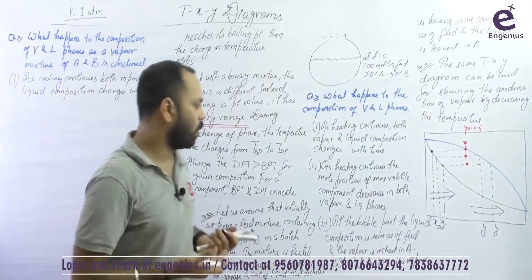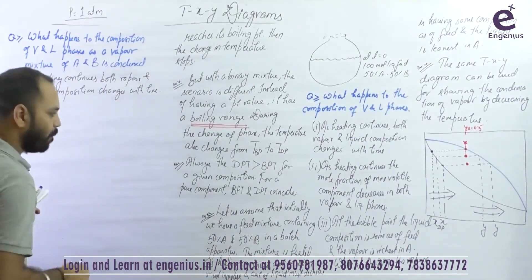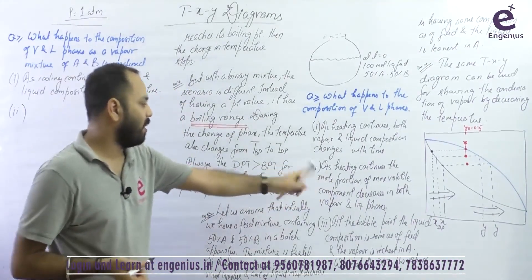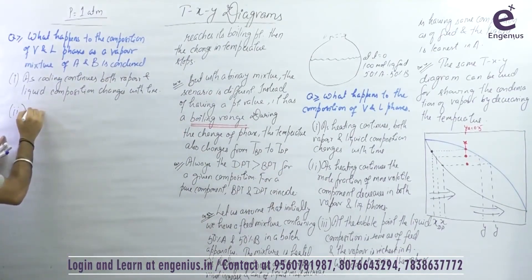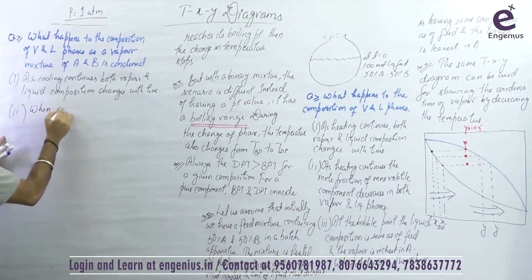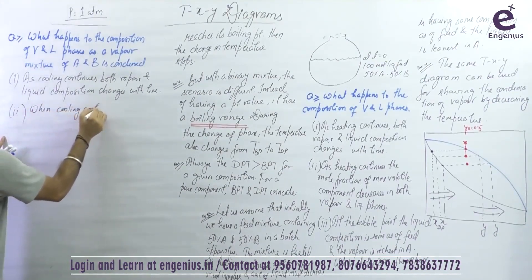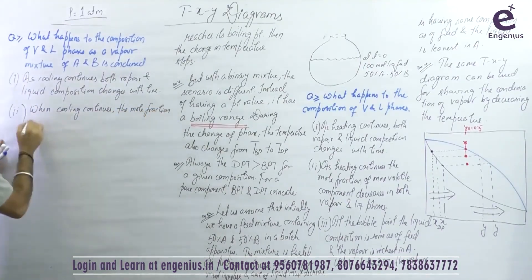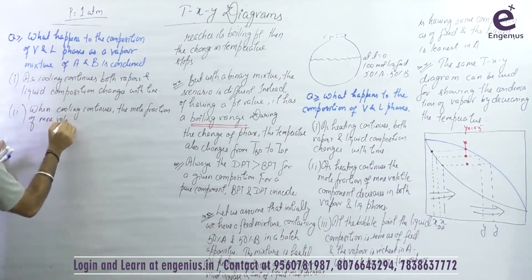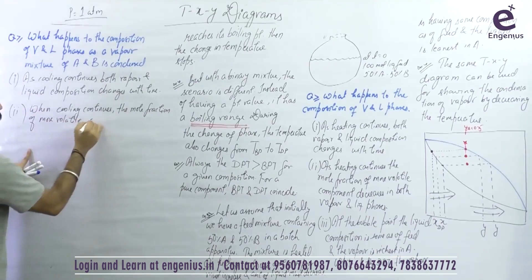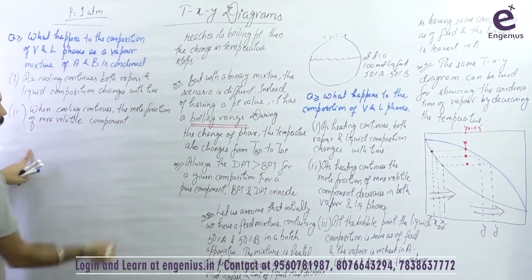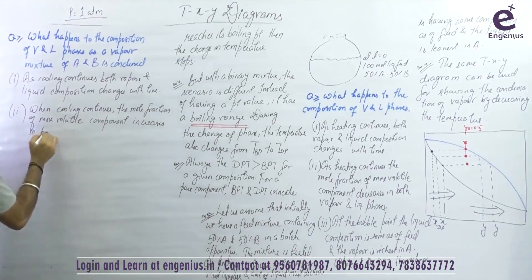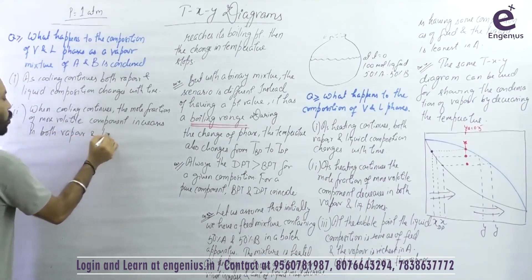Second point: when I was heating, the mole fraction of the more volatile component decreases in both vapor and liquid phases. Now when cooling continues, the mole fraction of the more volatile component increases — it is very obvious from the diagram — increases in both vapor and liquid phases.